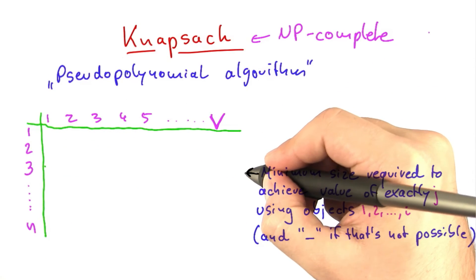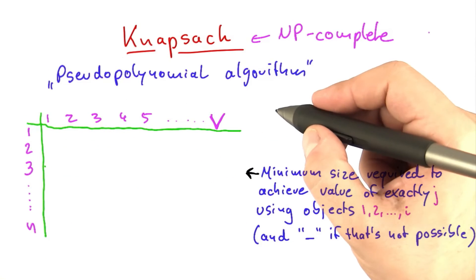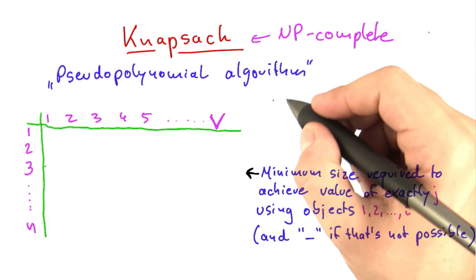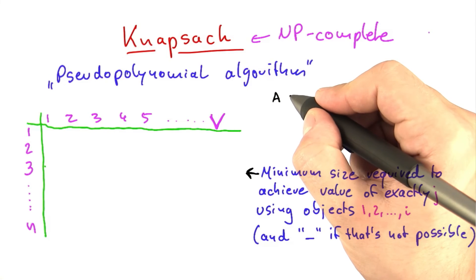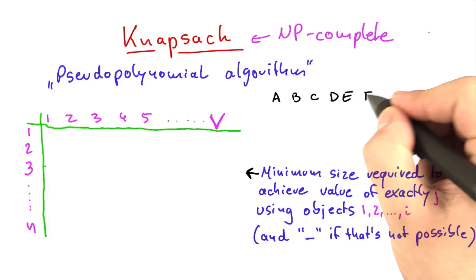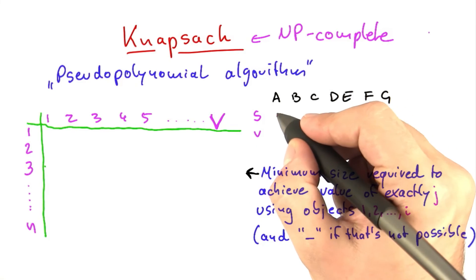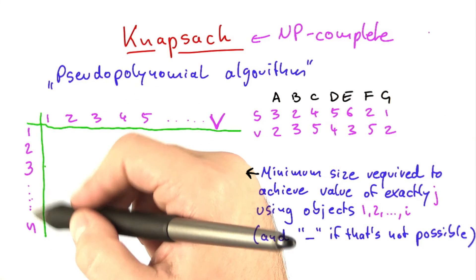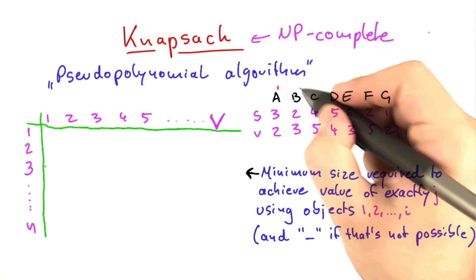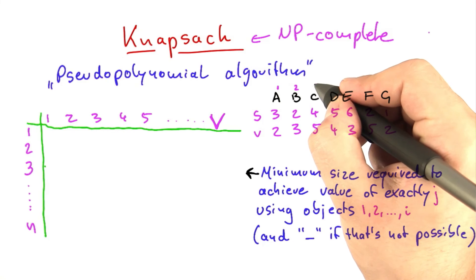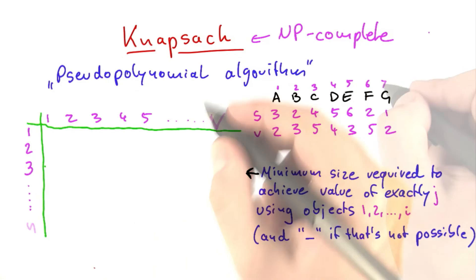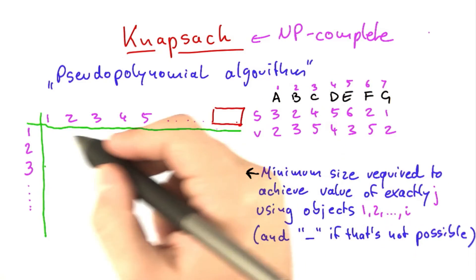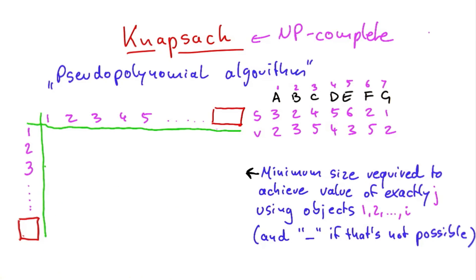Sometimes it's not possible to achieve a value of exactly j using those objects, so we'll write a dash into the table in that case. Let's use the example from before: objects A, B, C, D, E, F, G, with their sizes — 3, 2, 2, 3, and so on — and their values. We'll label those items 1 through 7. First question for you — a brief quiz — how many columns does this table have and how many rows does it have?